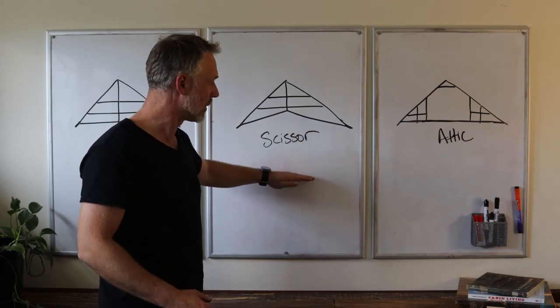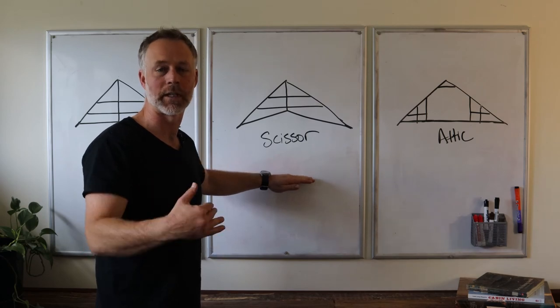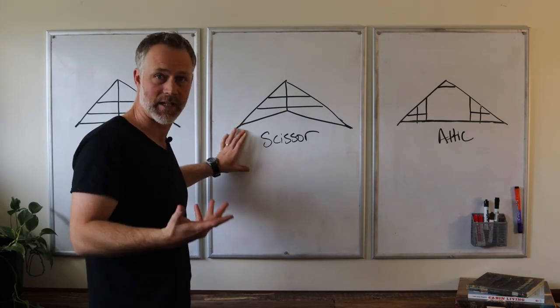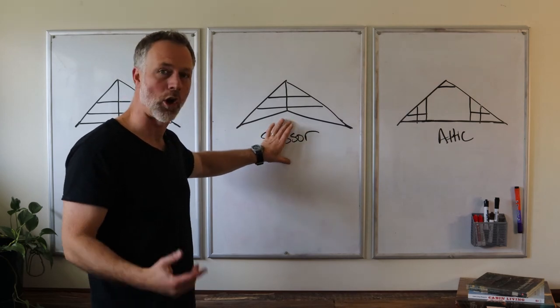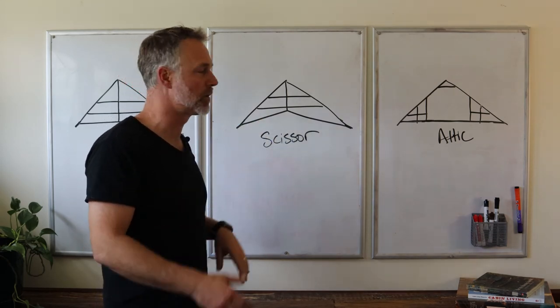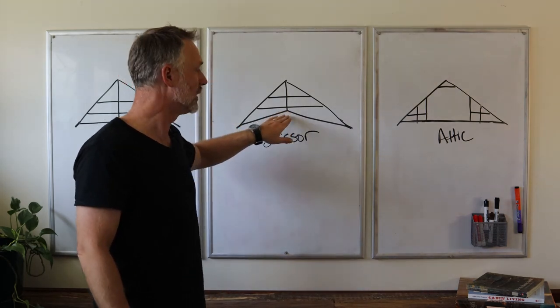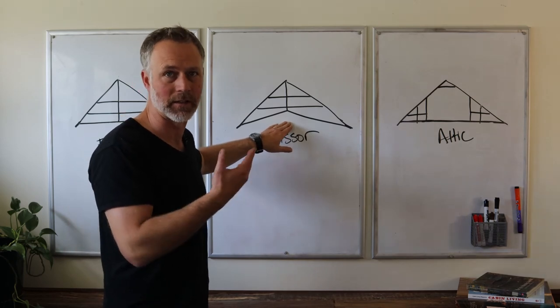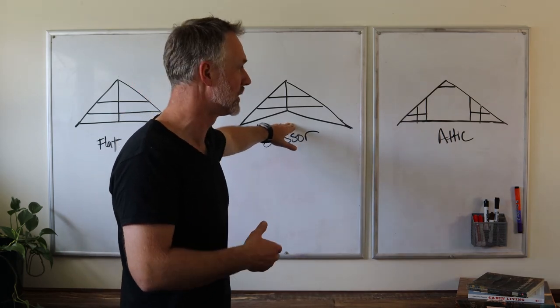But for some reason, say you had a building inside that was only 10 feet tall, so the outside wall is 10 feet, but you want to put a car lift inside. You could gain a few feet as you go right there to the center of the building. These do cost more money because the engineering is different and the lumber is going to be a little bit different on a scissor truss.